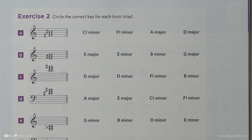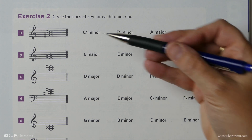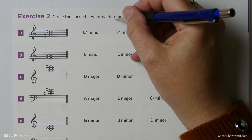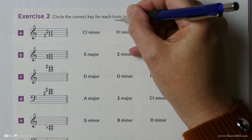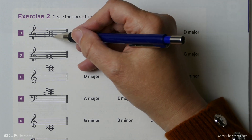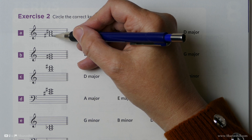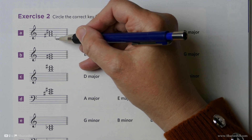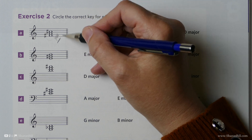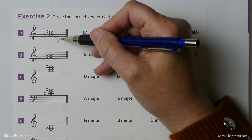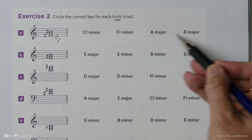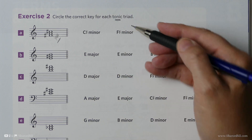In exercise 2, we are asked to name which key represents each of these tonic triads. The clue is in the title — tonic, being the first degree of the scale. Here, the first degree of the scale at the bottom of this triad is F sharp, and so it must be F sharp something. We then just need to decide if it's major or minor, and so our only option here is F sharp minor.